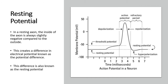Nerve impulses are electrical impulses, not electrical current. Electrical impulses are due to differences in charge across the cell membrane. In a resting axon — one not receiving any stimuli and not transmitting any impulse — the inside of the axon is always slightly negative compared to the outside. We call this an electrical potential difference, and it is also what we call the resting potential. On the graph, the resting potential is about minus 70 millivolts, representing what is happening on the inside of the axon.